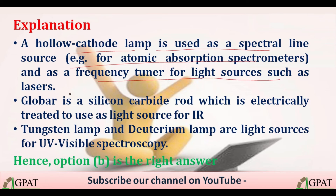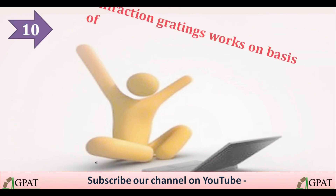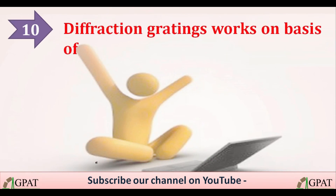Globar is a silicon carbide rod which is electrically heated to serve as the light source for infrared spectroscopy. Tungsten and deuterium lamps are light sources used in UV-visible spectroscopy. Option B, Globar, is the correct answer.